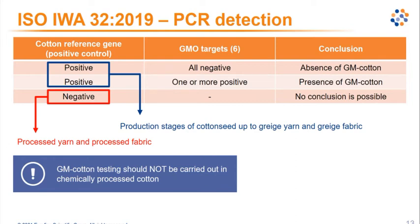According to the ISO IWA32 protocol and the standards for organic cotton, GM cotton testing should not be carried out on chemically processed cotton, because it does not contain sufficient cotton DNA for the GMO analysis.